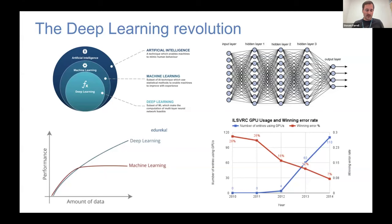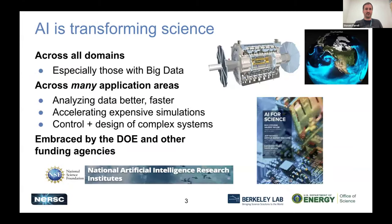Nowadays we all know about things like ChatGPT and large language models, but AI is behind a lot of what we use daily — voice recognition, Google search, recommendations, ads. AI is very much transforming science too, across all science domains. I haven't found a science domain yet where they can't use AI or aren't already looking closely at what they can do with it. It's having a bigger impact in those domains where they really have big data.